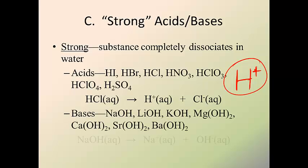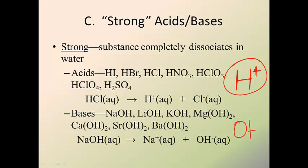Your strong bases are sodium hydroxide, lithium hydroxide, potassium hydroxide, magnesium hydroxide, calcium hydroxide, strontium hydroxide, and barium hydroxide. Notice that they come from the first two columns on the periodic table — Na, Li, K, Mg, Ca, Sr, and Ba are all alkali and alkaline earth metals. When they go into solution, they will always act as OH-minus. Strong acids are considered 100% H-plus and strong bases are considered 100% OH-minus. Memorize these — you will need them regularly throughout this unit.